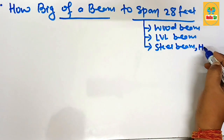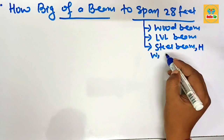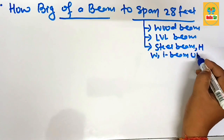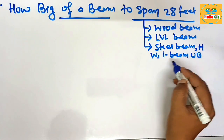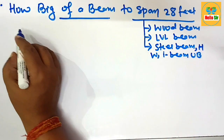The steel beam is also known by several names: the H beam, the W beam, the I beam, the universal beam, and the UB beam. There are several names for steel beam.